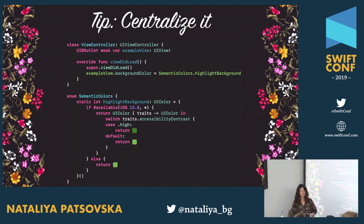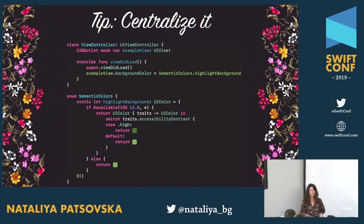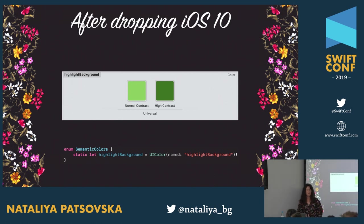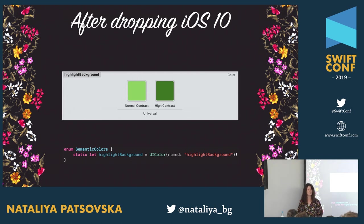It is not necessary to switch to semantic colors if you use this approach, but I highly recommend centralizing it. You name it something like 'highlight background,' check the iOS version and trait, and return accordingly. Use semantic names so users of this API don't expect it to always be one specific color. If you're dropping older iOS versions, you can also move to the asset catalog for a nice visual preview of your colors.